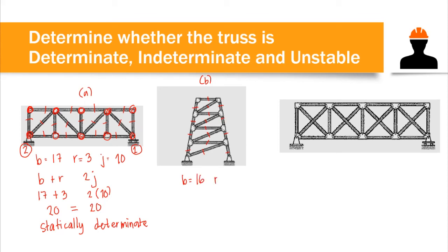The number of reactions: all supports are hinges, giving 2 reactions each, for a total of 4 external reactions. Counting the joints, we have 10 joints.